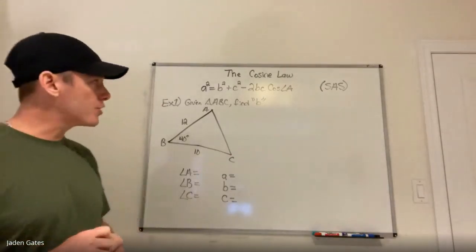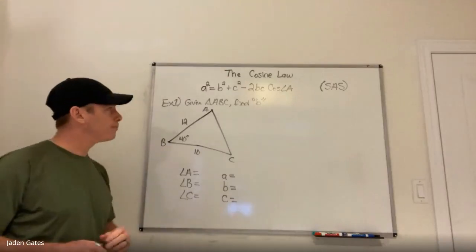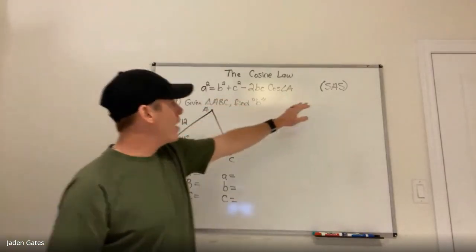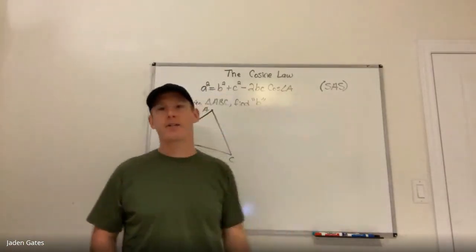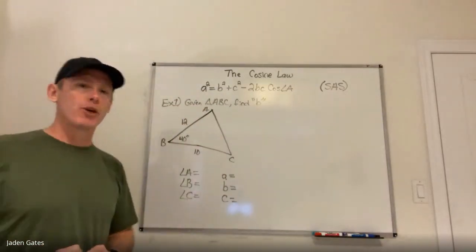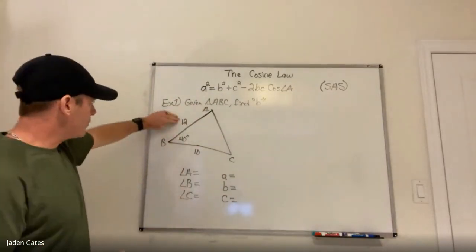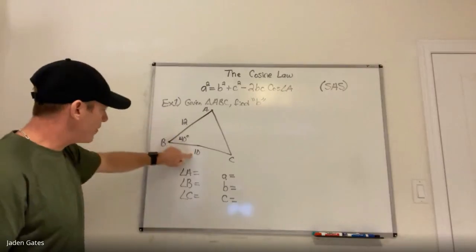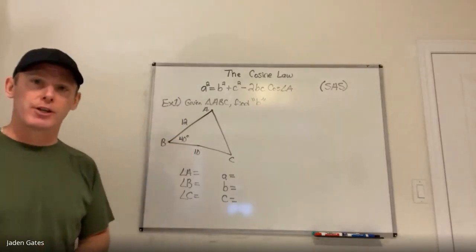The first situation we're going to do today is when you have what's called SAS — side-angle-side. That is when we're going to use the cosine law. So when you have a side, then the angle, and then the side as your given information, you cannot solve it using the sine law.